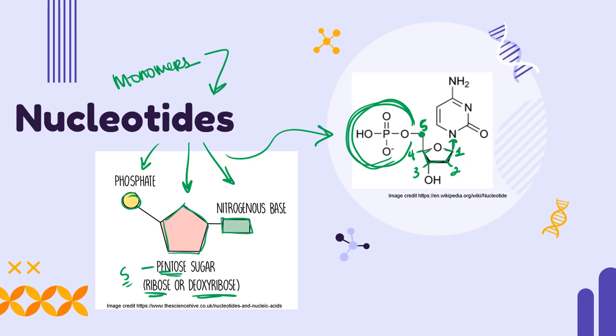When I put all three pieces together—nitrogenous base, pentose sugar, and phosphate group—I have a nucleotide.